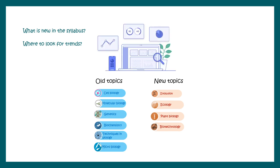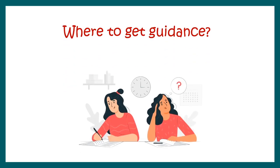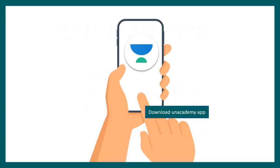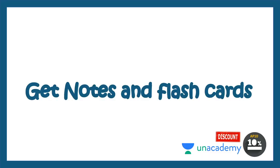They have added a new segment of biotechnology. Obviously, you can look at previous year questions for existing trends. If you are thinking about where to get guidance, you can get guidance from the Unacademy learning app. You can download the app for free from the app store. There you would find many classes by me and many other educators in India — plus courses which are paid, and also special classes which are free. You would also get notes and flashcards from the same learning app.